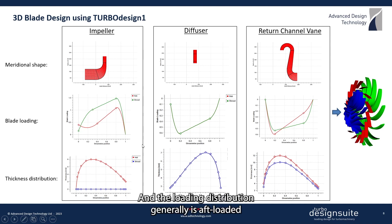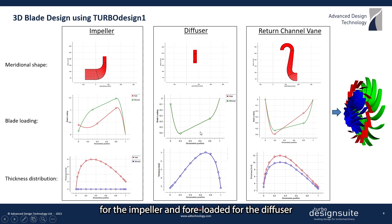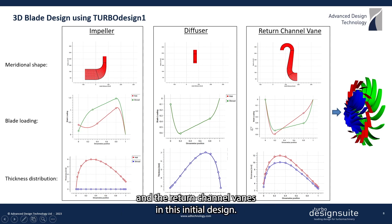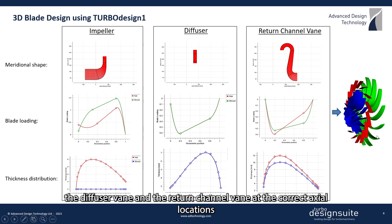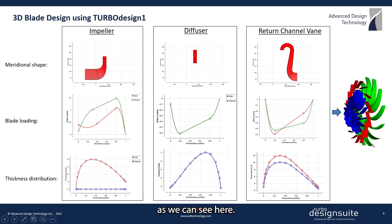The loading distribution is generally front-loaded for the impeller and aft-loaded for the diffuser and the return channel vanes in this initial design. This results in the 3D geometry of the impeller, the diffuser vane, and the return channel vane at their correct axial locations, as we can see here.